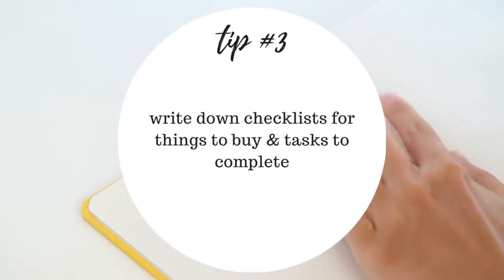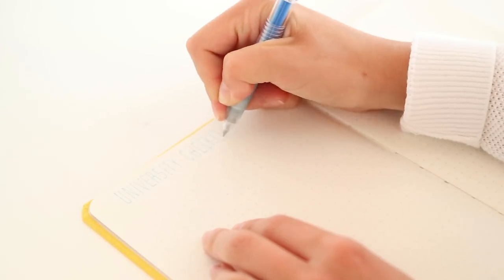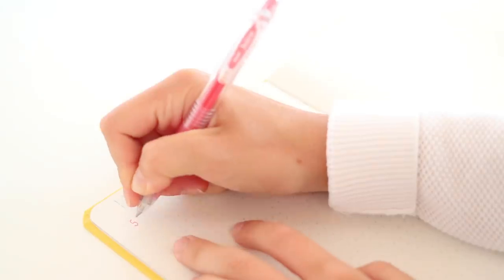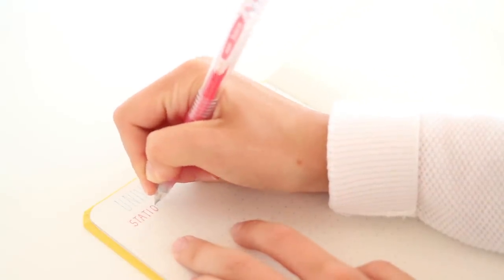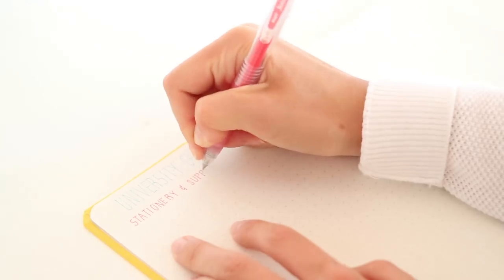Next, I always write down checklists that need to be completed before the new academic year starts. This year I've made two checklists: one for the stationery and supplies I need to get, and one for the tasks that I need to do.